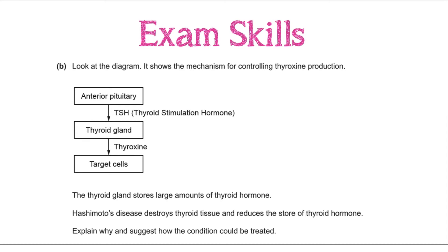In the second part of the question we need to look at the diagram showing the mechanism for controlling thyroxine production. Straight away we can tell this is a question about controlling thyroxine production, which is something we know about. The thyroid gland stores large amounts of thyroid hormone, and Hashimoto's disease destroys thyroid tissue and reduces the store of thyroid hormone. We need to explain why and suggest how it can be treated. Go back to what you know — we're talking about controlling thyroxine production, and we know this is all to do with a negative feedback system.